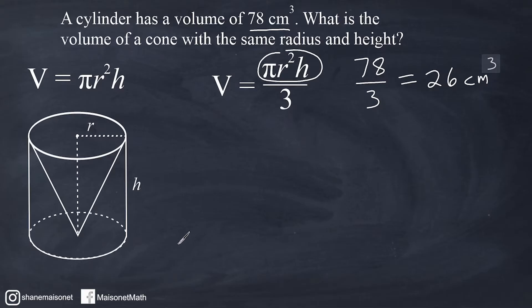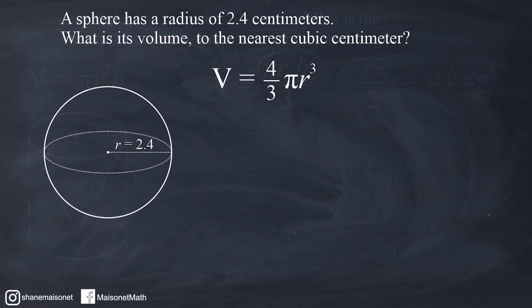Let's go ahead and look at a second example involving volume. We have a sphere here with a radius of 2.4 centimeters, and we have to calculate its volume to the nearest cubic centimeter.